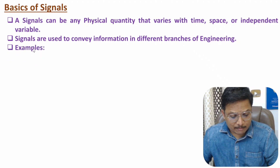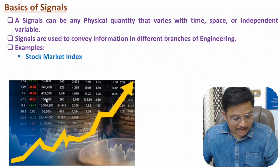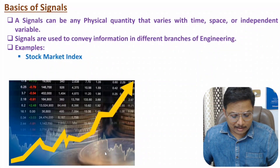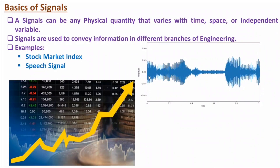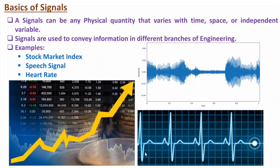Let me give a few examples. If you talk about the stock market, you can analyze it by signals with respect to time — you might have seen graphs of the stock market. Another example is the speech signal; if you observe a speech signal, it has a characteristic waveform, and as and when we have words, there will be vibrations visible in the signal. If you observe the heart rate signal, it appears with spikes corresponding to each heartbeat.